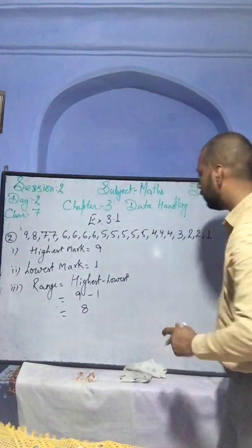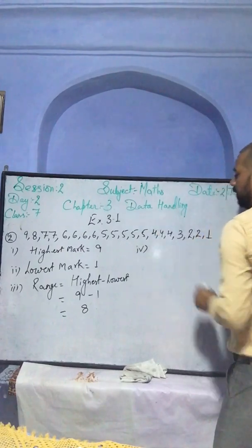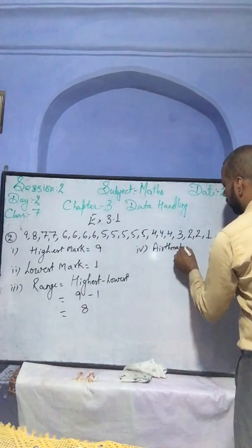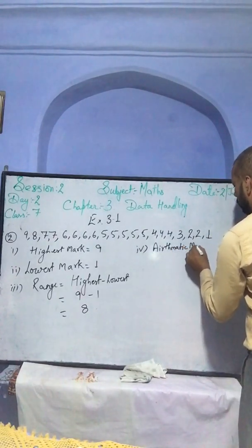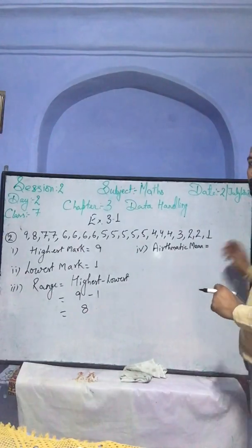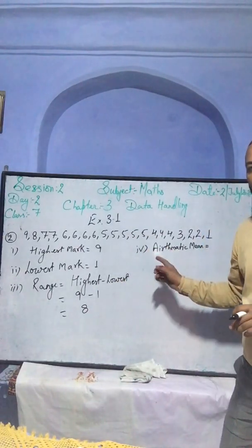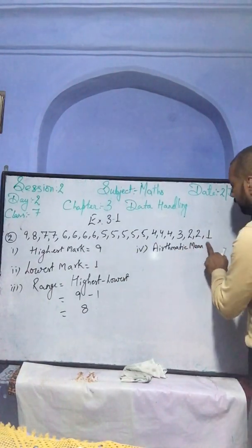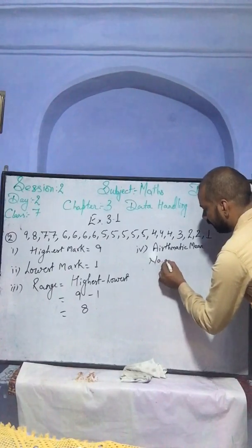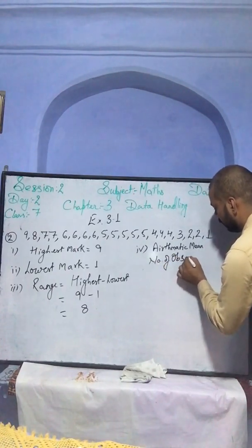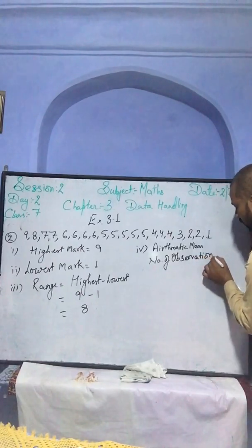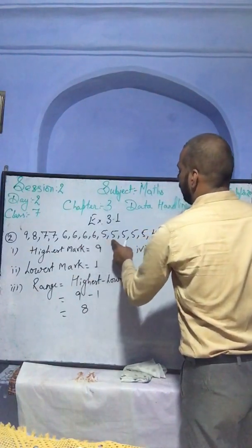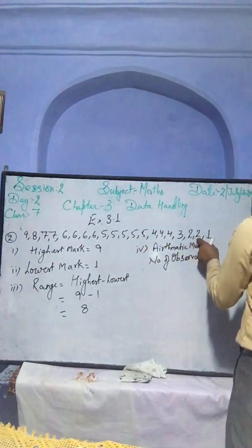Last part — the fourth question — what is the arithmetic mean? The arithmetic mean is the sum of all observations divided by the number of observations. So we need to find the number of observations. How many observations are there? Let's count: 1, 2, 3, 4, 5, 6, 7, 8, 9, 10, 11, 12, 13, 14, 15, 16, 17, 18, 19, 20. There are 20 observations.